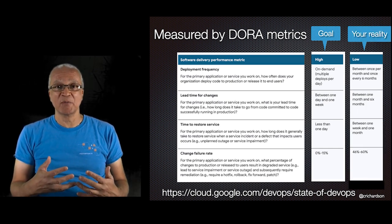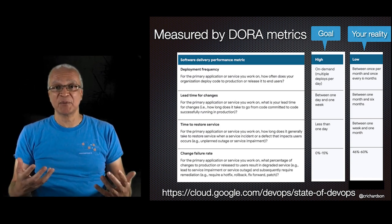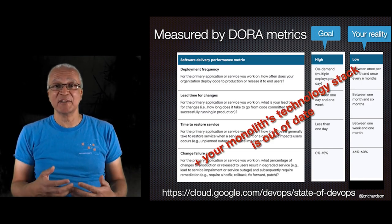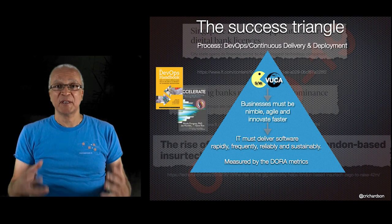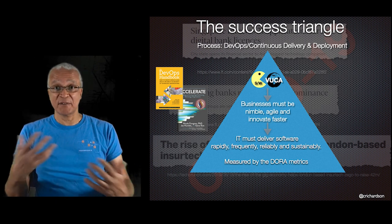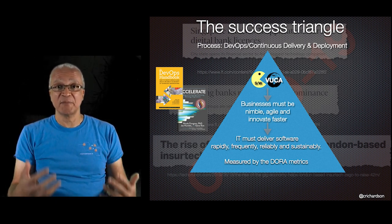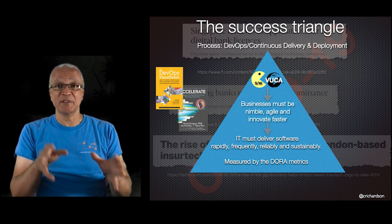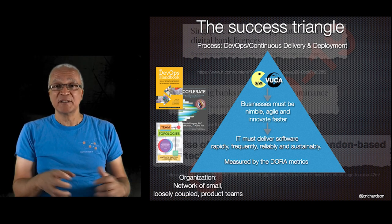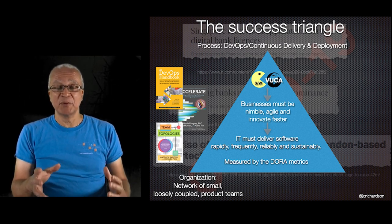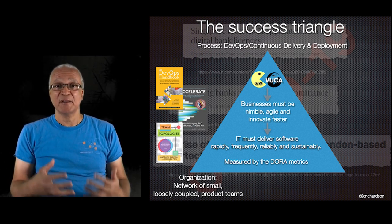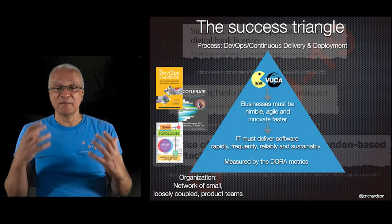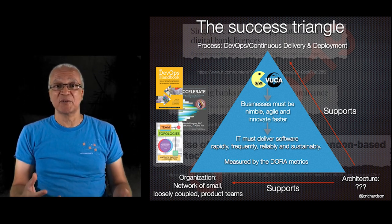Unfortunately, reality is often very different. Deployments are infrequent, painful, and often result in outages. Your monolithic technology stack is out of date. To deliver software rapidly, frequently, and reliably, you need what I call the success triangle. First, you need the right development process — specifically DevOps — where developers commit frequently and an automated pipeline builds, tests, and deploys changes. Second, you need a loosely coupled network of cross-functional autonomous teams — the book Team Topologies is a must-read. Finally, you need an architecture that supports DevOps and loosely coupled teams.